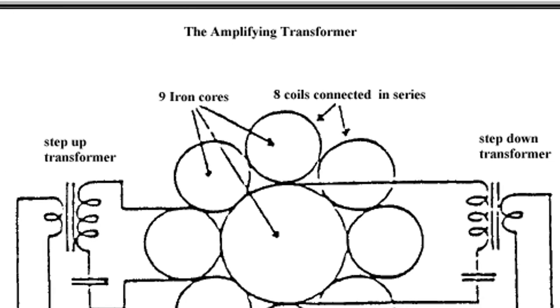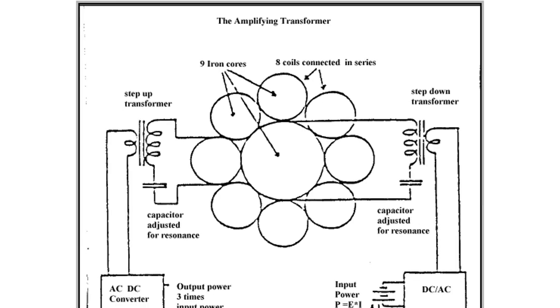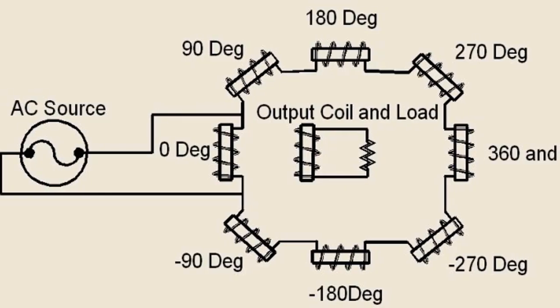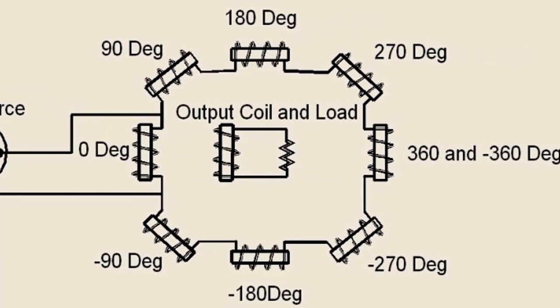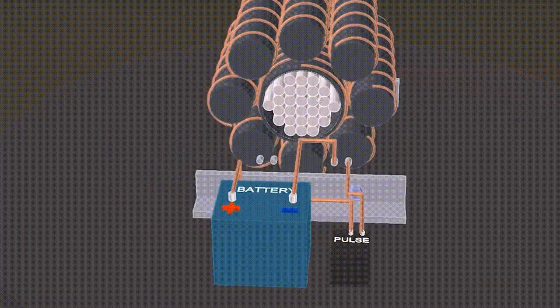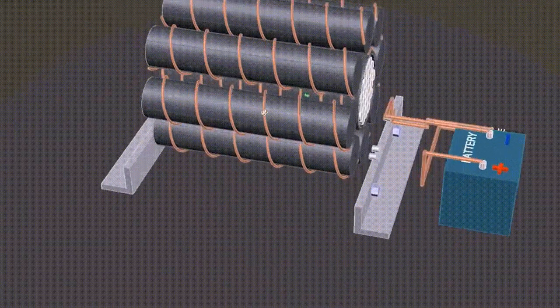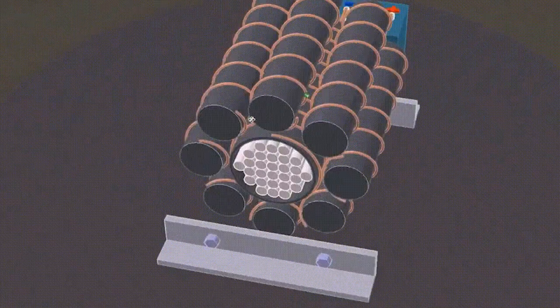Motionless electromagnetic generator, MEG, free energy transformer. Generate electricity to power your home with just a battery or phone charger. The square pulse generator controls the power generation on demand.